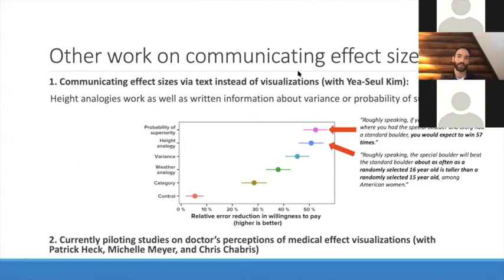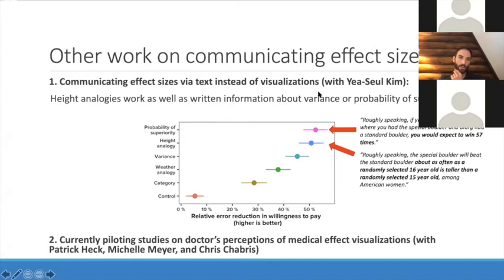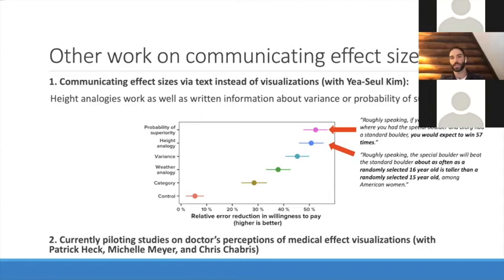That sums up everything from the first paper with Dan and Jessica. Now I want to talk briefly about a working paper and one in-progress set of experiments. We have other work on communicating effect sizes — Yesel Kim was the one who found the great heights analogy. We were looking for analogies because Dan and I have a bunch of work on numerical perspectives to communicate information in easier-to-understand formats. We thought about text instead of visualizations, because in a newspaper article you don't see a plot but you do see statistics cited, and we wanted to give journalists a better way to communicate uncertainty.